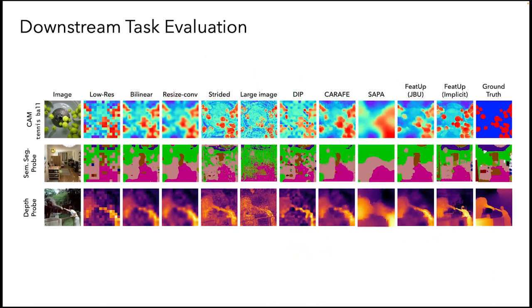We also evaluate our methods on downstream tasks. Visualizing the class activation maps in the top row, we can qualitatively see that FEEDUP produces salient regions accurate at the pixel level, and that the CAMs are more cohesive and boundary-focused.